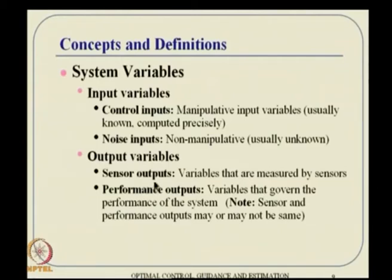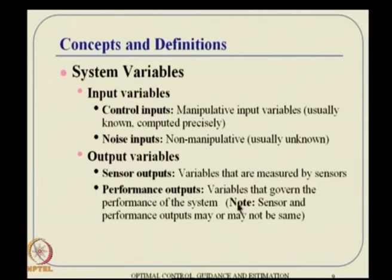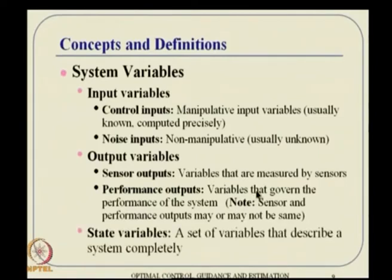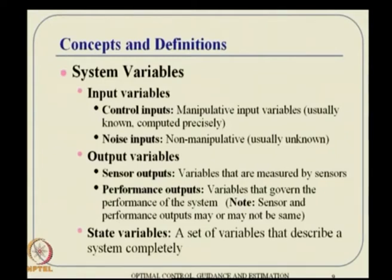There are two kinds of output variables. One set can be measured by sensors — called sensor outputs — but these need not be what you want to control. The variables you actually want to control, or use as a performance measure, are called performance outputs. Sensor and performance outputs may or may not be the same. State variables are a set of variables that describe a system completely.